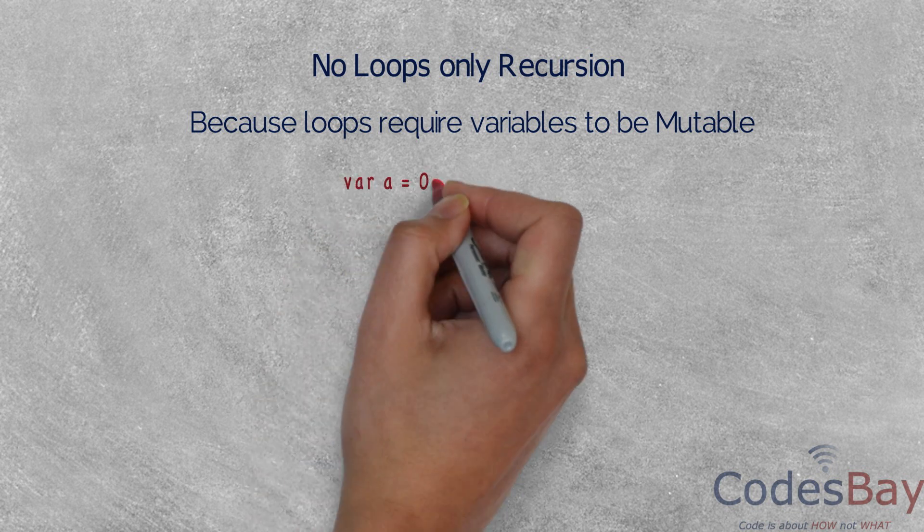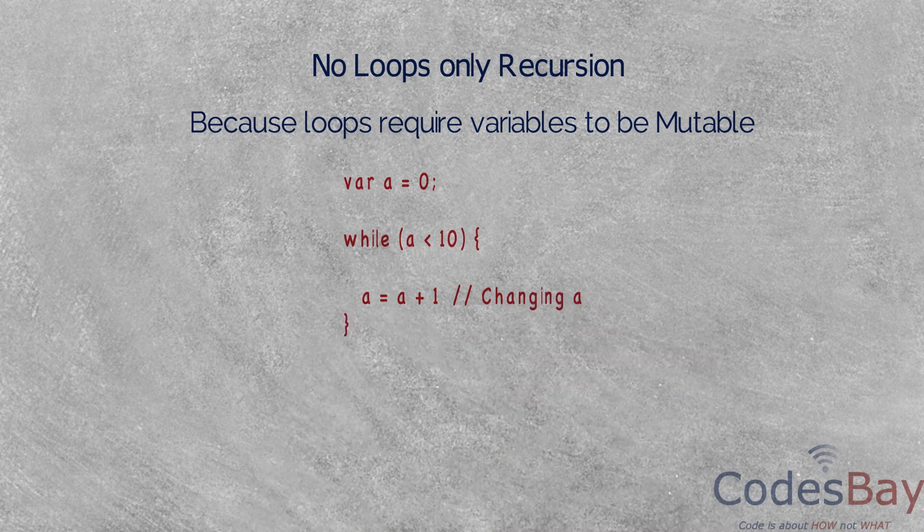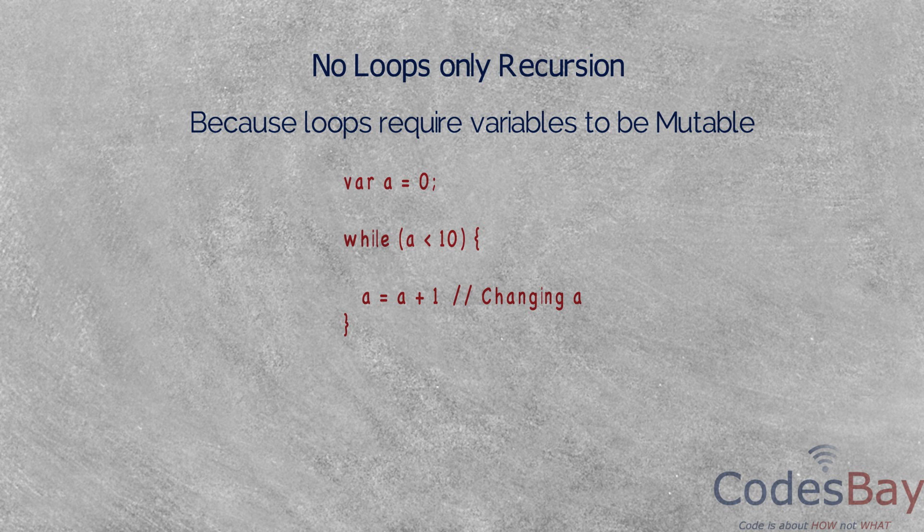For example, you can see in this particular code that you cannot come out of loop unless and until you change the variable called a. And in functional programming this is not done, not acceptable. That's why you cannot have loops in functional programming.